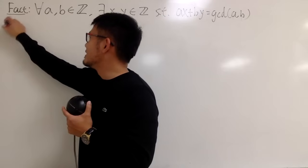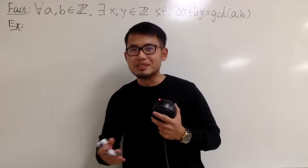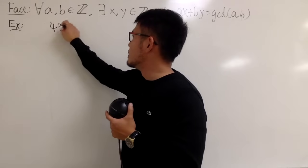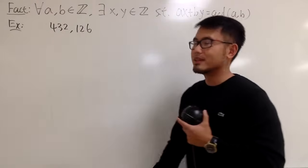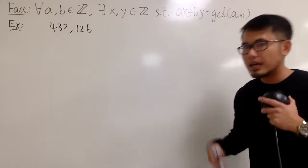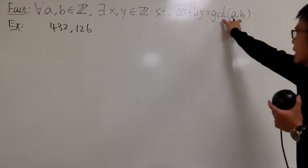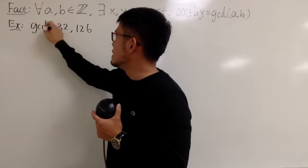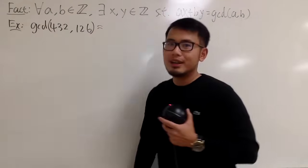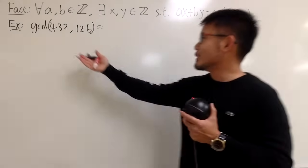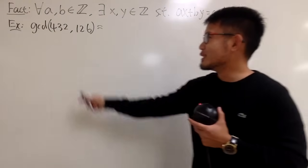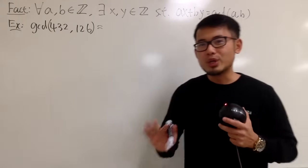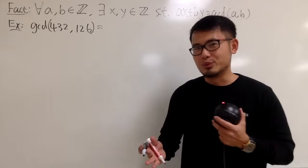I'll give you an example. I'll start with two numbers — let's use 432 and 126. So we have these two numbers, and as I said earlier, let's go ahead and find the greatest common divisor of these two. You can do it the old way with factor trees, but we're all adults now — let me show you the number theory way.